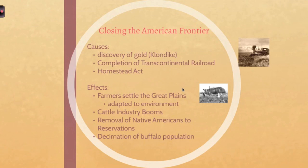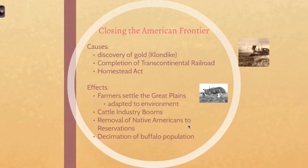Another major effect of closing the frontier is a boom in the cattle industry. The presence of railroads really helps the cattle industry boom, because now you have a way to transport the beef from the Texas region specifically, out to California or back east where there's a lot more people that need food. One of the negative consequences of closing the frontier was the removal of Native Americans to reservations. People taking the Homestead Act land led to a lot of displacement of Native Americans. Another negative effect is the decimation of the buffalo population — hunters went and killed them for their hides and led to a near extinction of the species.